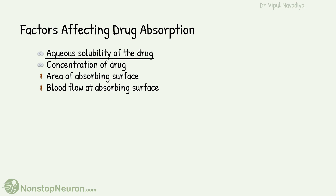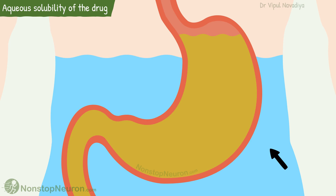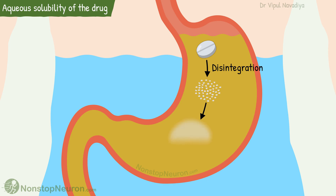First, the aqueous solubility of the drug. The medium of our body's internal environment is water, and the drug given in solid form cannot enter in its intact form. It must dissolve in the aqueous biophase to become available for absorption. This occurs in two steps: first, disintegration, which is the breaking down of solid dosage form into fine particles; and second, dissolution, which is the dissolution of active drug molecules from fine particles into the solution. After this, the drug can cross the biological membrane and get absorbed. So basically, disintegration and dissolution determine the aqueous solubility, which in turn determines the rate of absorption.